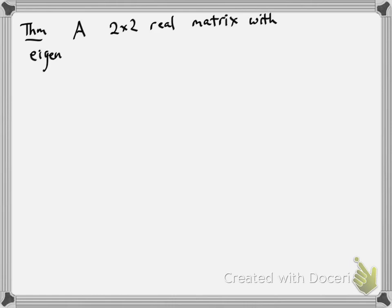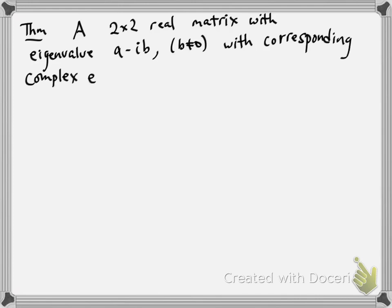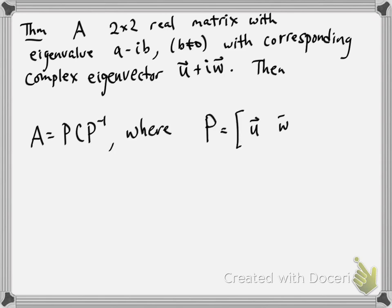Here's a theorem that tells us if we have a complex eigenvalue, then A is going to be similar to a very special matrix. Suppose A is a 2×2 real matrix with eigenvalue a - ib, with b not equal to 0, and corresponding complex eigenvector u + iw. Then A is similar to this matrix C, so A = P·C·P⁻¹, where P is going to be made up of, for its columns, the vectors u and w—that's the real and imaginary parts of the complex eigenvector.